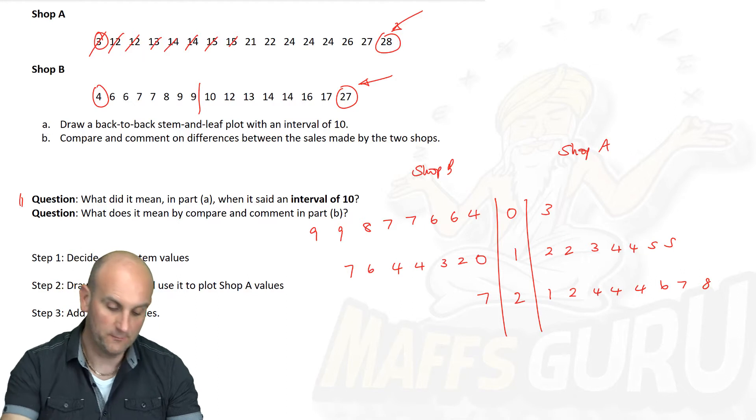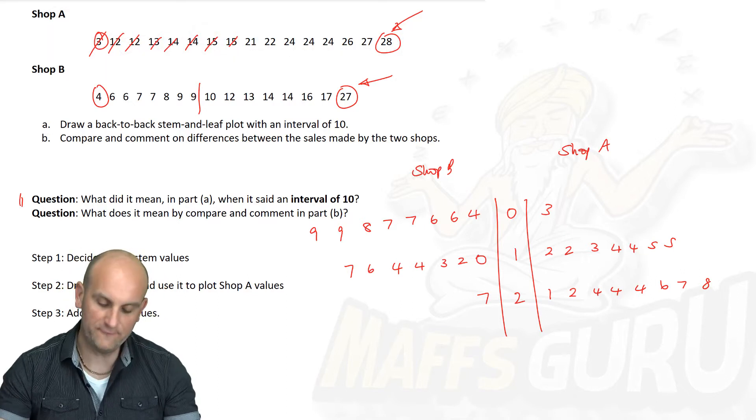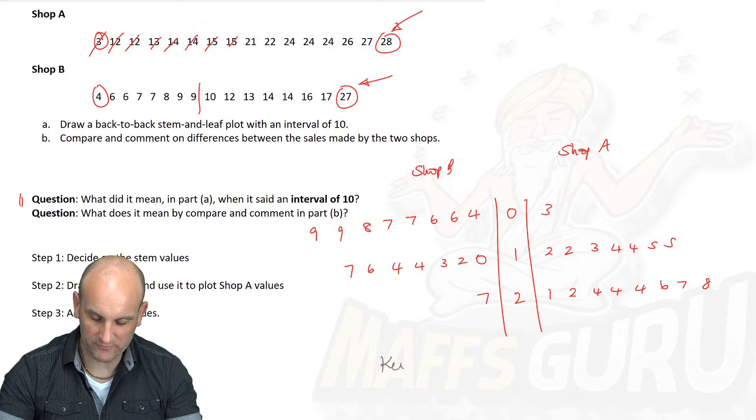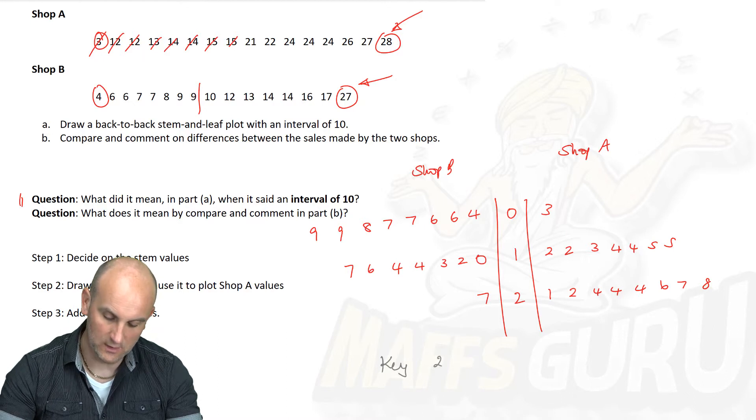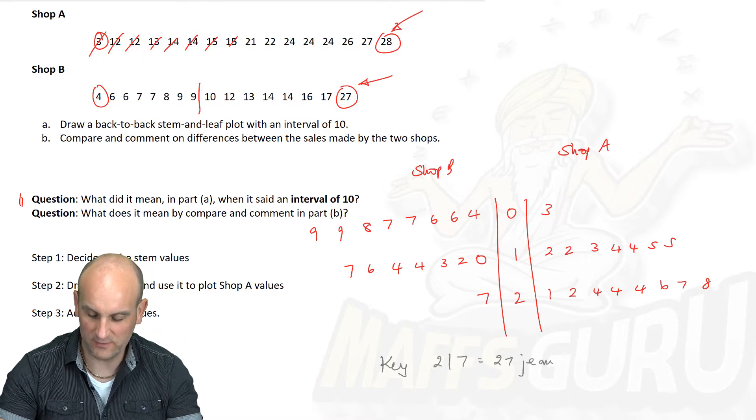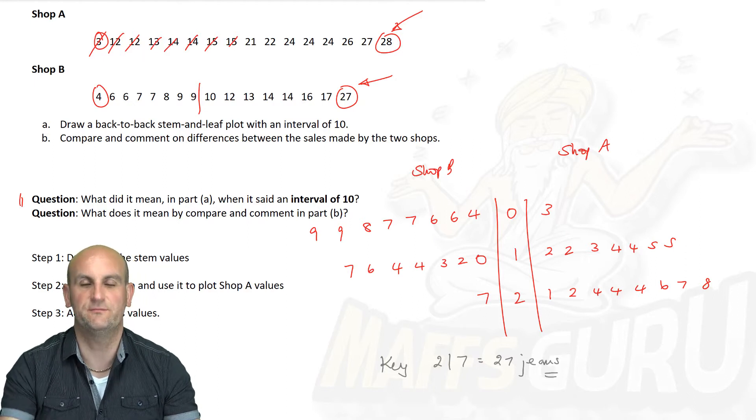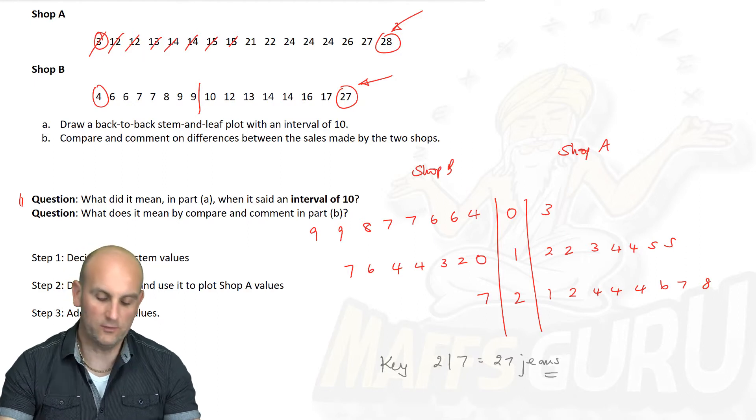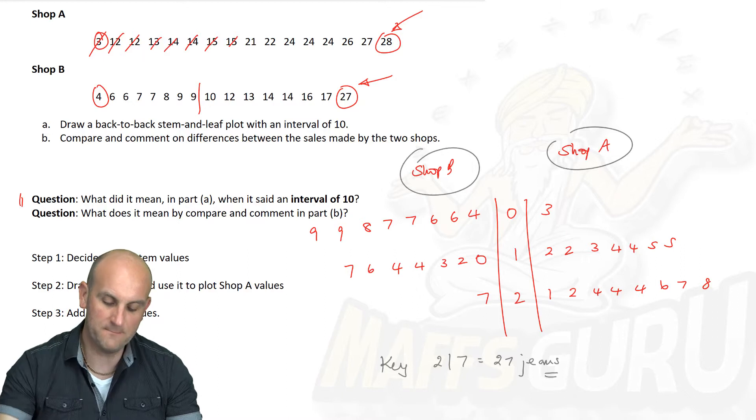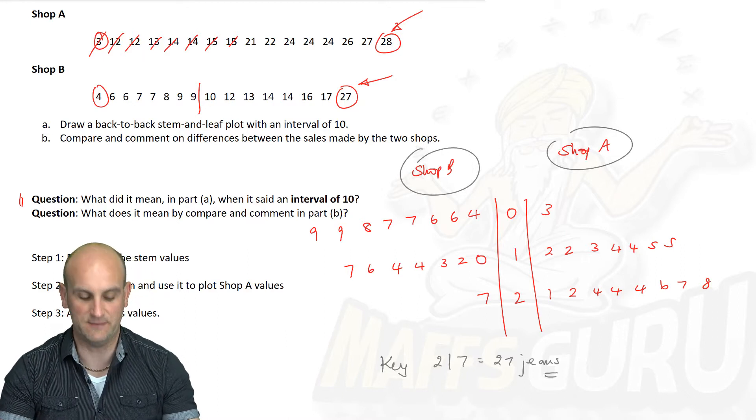Yes? Because what have I forgotten? I have forgotten my key. It's very important to say the key. And so 2 with a line and a 7 is equal to 27. And because we know that we're dealing with jeans, we'll say 27 pairs of jeans. There is my shop A and shop B and my back-to-back stem leaf plot because they're literally back-to-back.